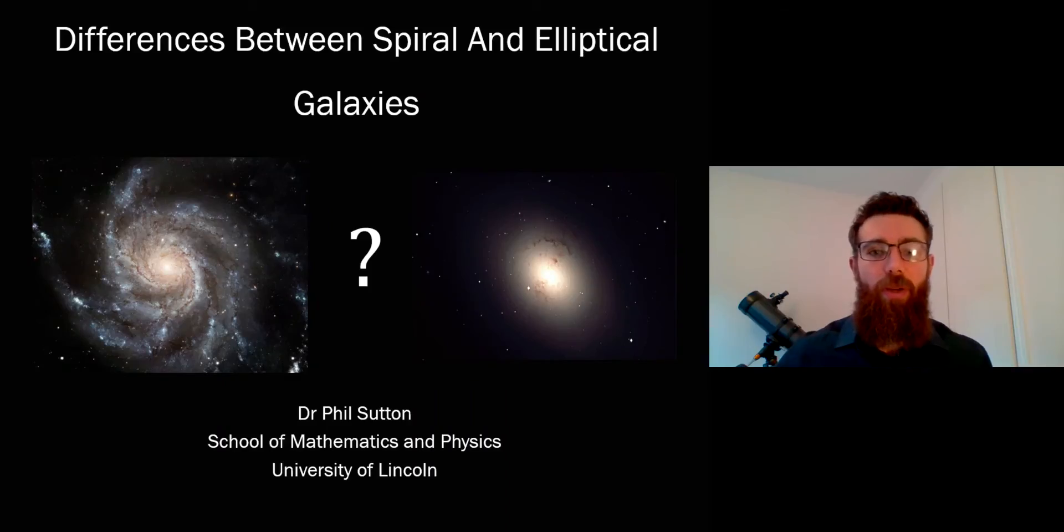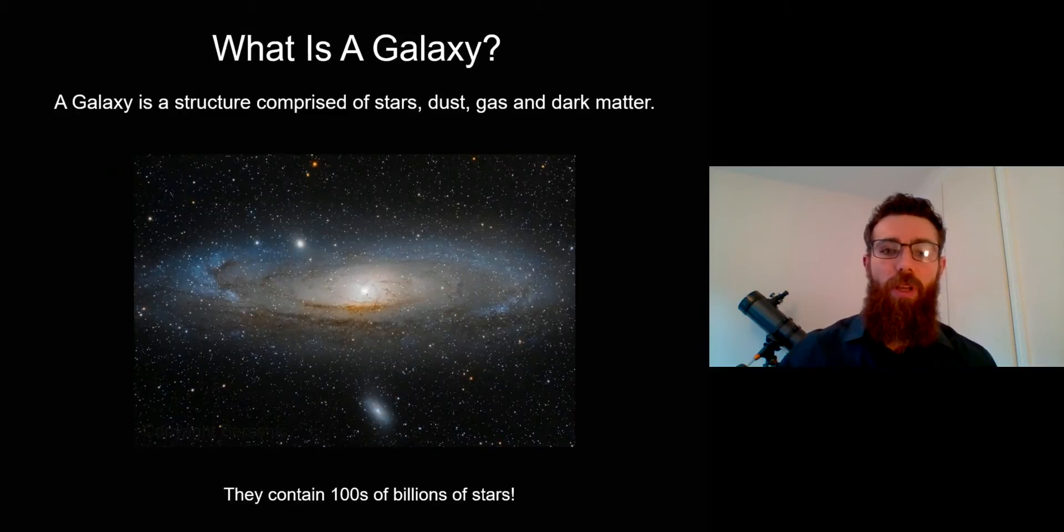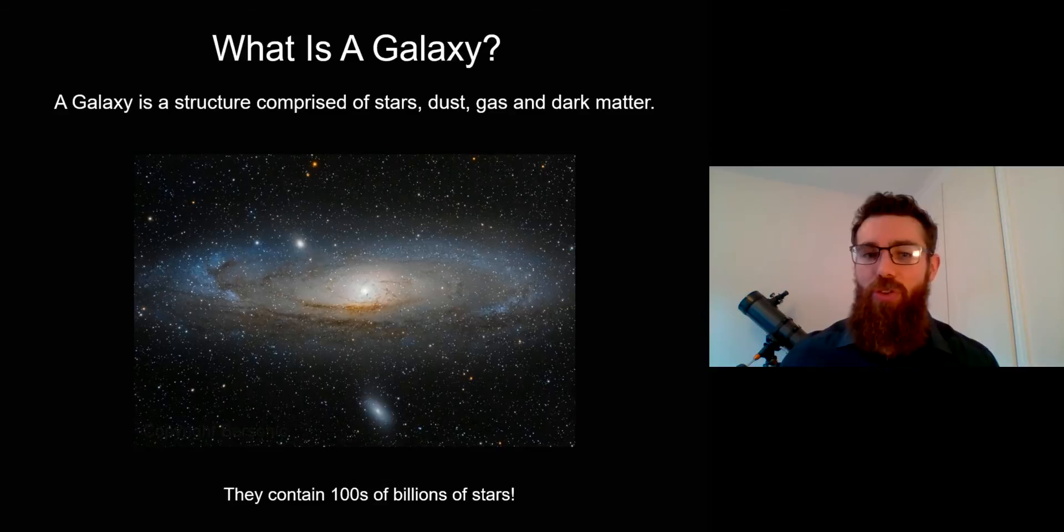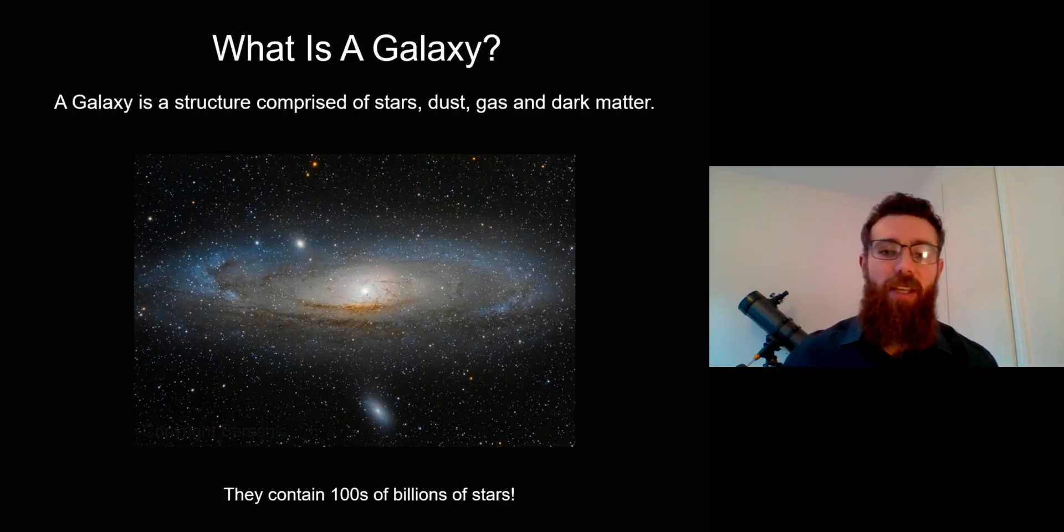Welcome to this short video on galaxies. I want to take this time to have a look at the differences between spiral galaxies and elliptical galaxies. If we're not familiar with what a galaxy actually is, these are very large structures that contain hundreds of billions of stars generally, and they're made up of stars, dust, gas, and we should include dark matter there as well.